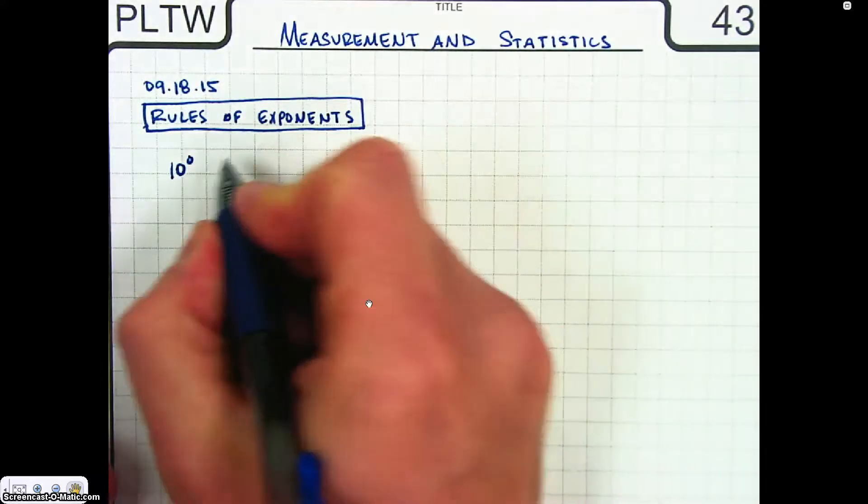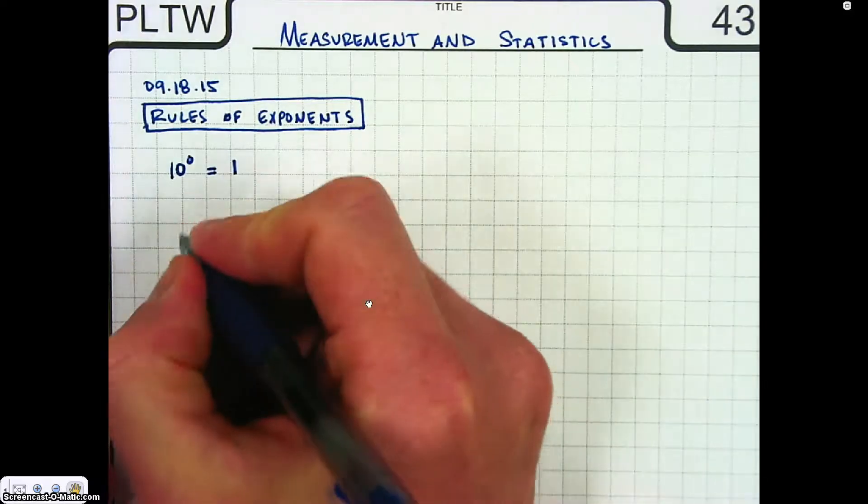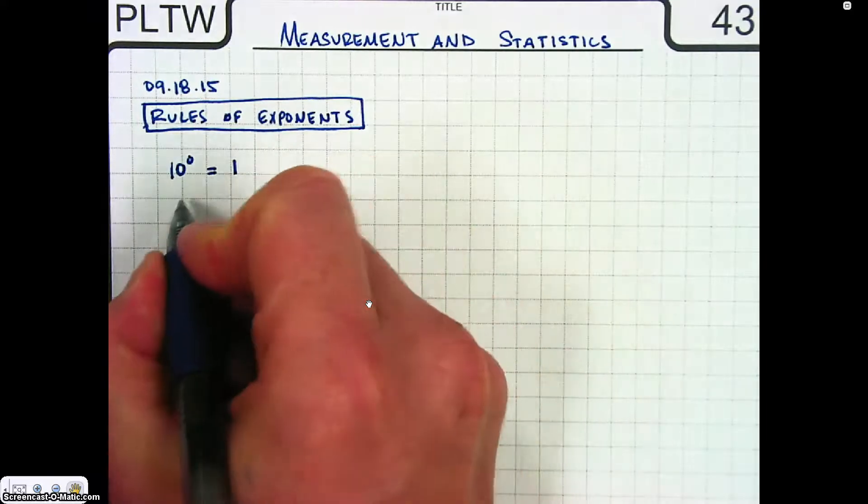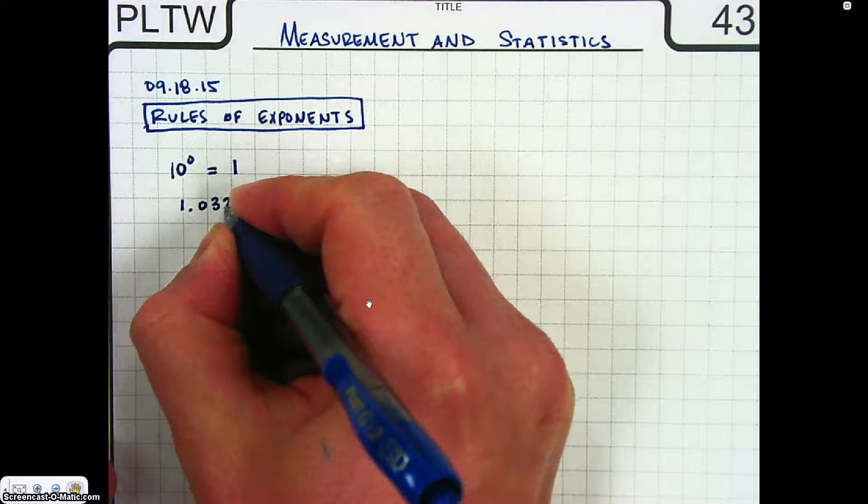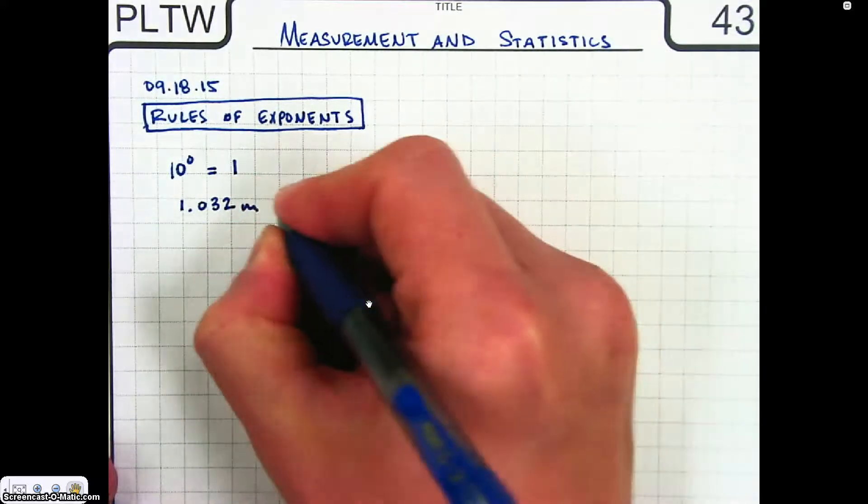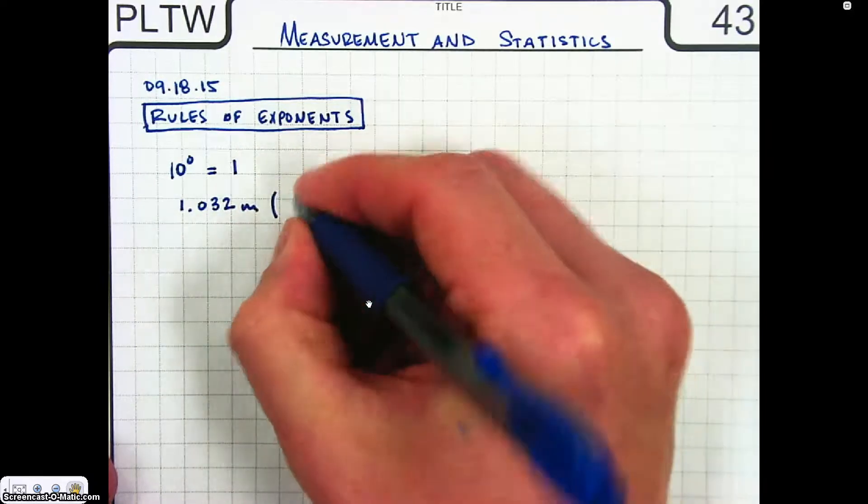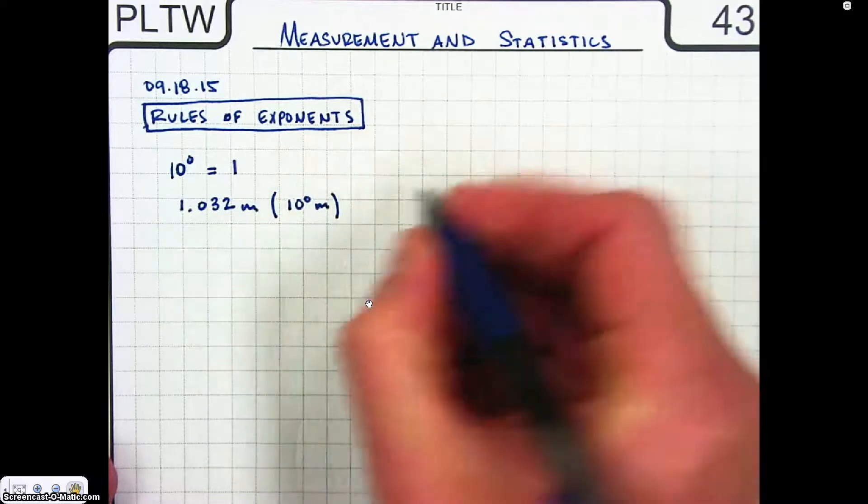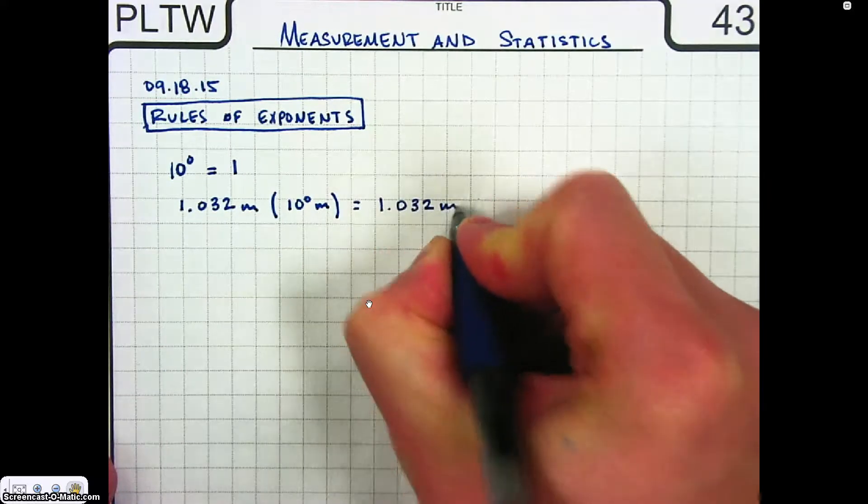10 to the 0 is equal to 1. And so if we have a number like 1.032 meters and we multiply that by 10 to the 0 meters, we still have 1.032 meters.